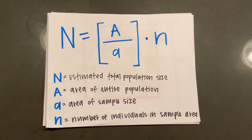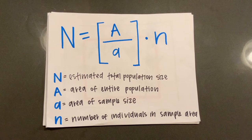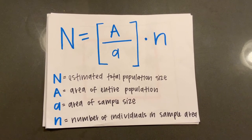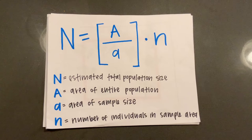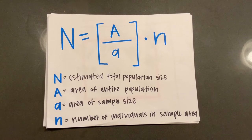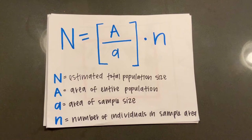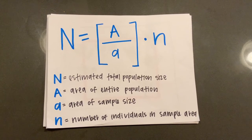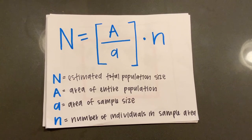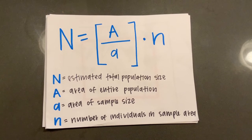The equation used for this method is N = (A / a) × n, where capital N equals estimated total population size, capital A equals the area of the entire population, lowercase a equals the sample size, and lowercase n equals the number of individuals in a sample area.